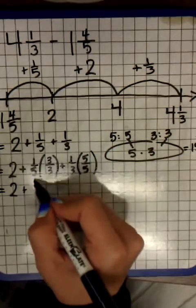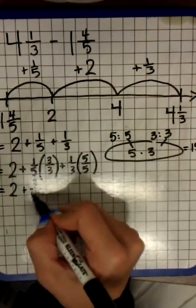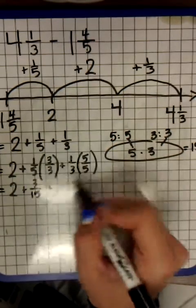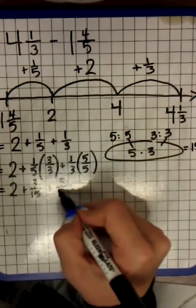So now I have two plus one times three is three. Five times three is fifteen. Plus one times five is five. Three times five is fifteen.